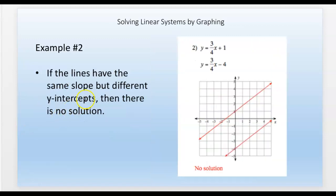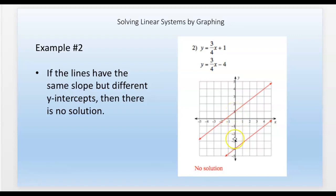Example two: these two lines both have the same slope of positive three-fourths. However, they have different y-intercepts — one goes through negative 4 and the other through positive 1. They're parallel lines that never intersect, so there is no solution to this system of equations.